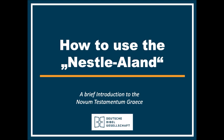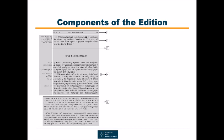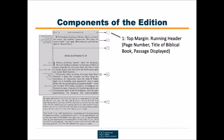The Novum Testamentum Graece, most often briefly called Nestle-Aland, provides a wealth of information in a comparatively little space. Alongside the Greek text, different information is grouped. Basically, a page of the Nestle-Aland consists of five parts.